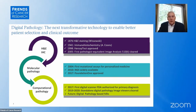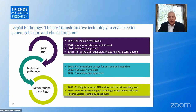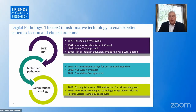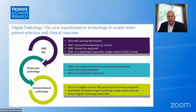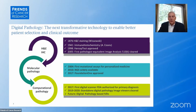Immunohistochemistry became developed in 1941, but it really became quite well used in the early 90s. And it was in 1998 that the Hercept test was FDA-approved for Herceptin, which really introduced the field of precision medicine that we're in today. In the last decade, molecular pathology became quite commonly used with the development of NGS in 2010 and the approval of the first companion diagnostic in 2017.